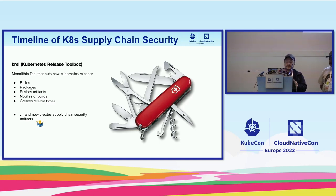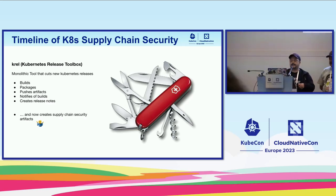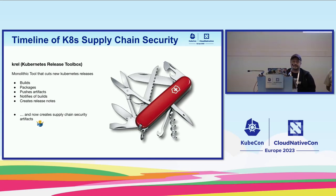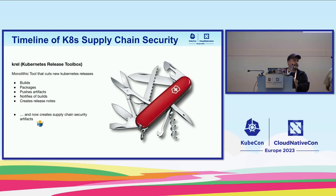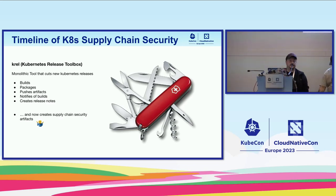The way we do it is we have this big monolith binary that we run to cut releases. It takes care of a bunch of stuff: it builds Kubernetes — the binaries, the images, the system packages — and then pushes the artifacts to the registries and to GitHub. All the GitHub objects like tags get taken care of by that binary, and it also creates a release note.